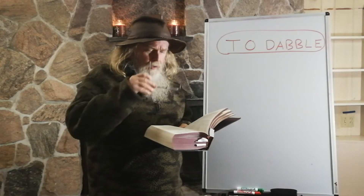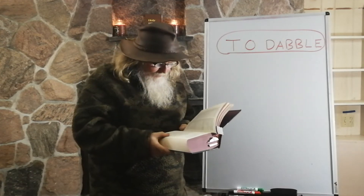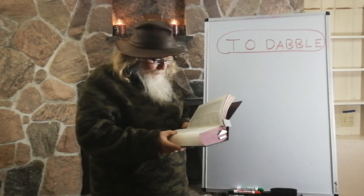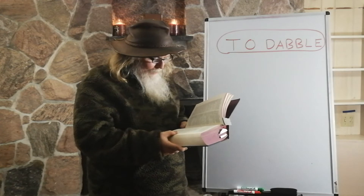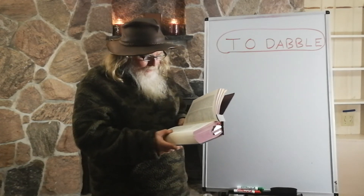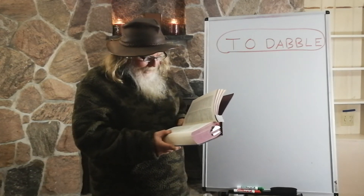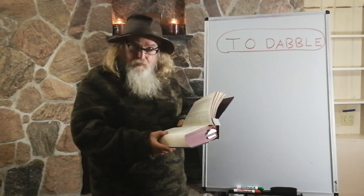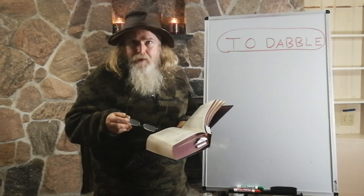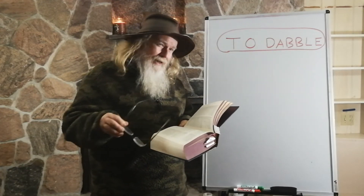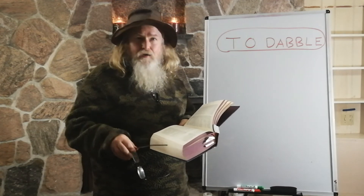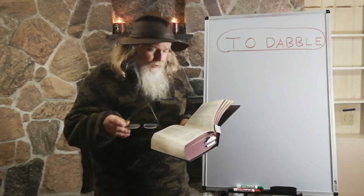We're going to go to Samuel Johnson's Dictionary of 1755, and it says: to dabble — to play in water, to do anything in a slight shallow manner, to tamper. It doesn't have a good feel about it. It sounds like someone intermingling or disturbing something, but not doing it with a good intention.